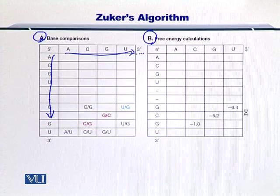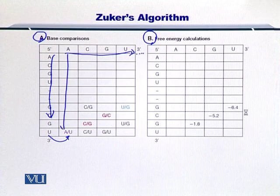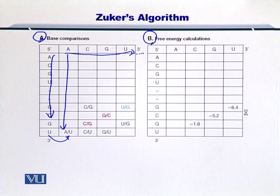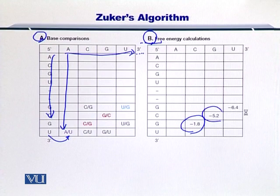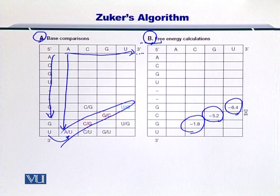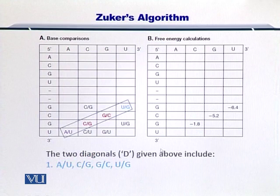What you have to do is to see which nucleotides can form hydrogen bonds. G-C, A-U, and G-U can form hydrogen bonds. Once you have completed this table, you can look at table B and compute the free energies given out as a result of the formation of these bonds. Moreover, you can compute all the diagonals that are there in matrix A.